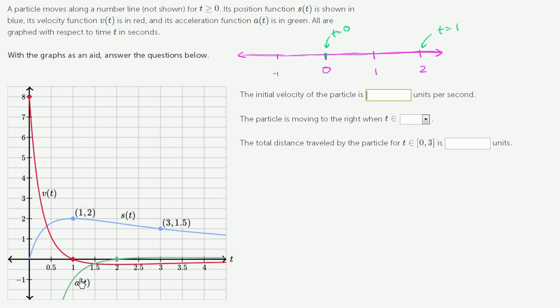And the acceleration also shows that same narrative. But anyway, let's actually answer the questions. The initial velocity of the particle is blank units per second, and I encourage you to pause this video and answer that. Well, we just said the velocity, at time equals 0, we're at 8 units per second. So we'll just put 8 right over there.